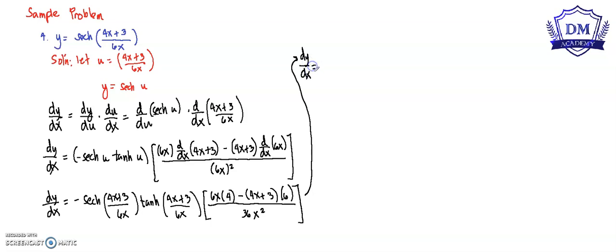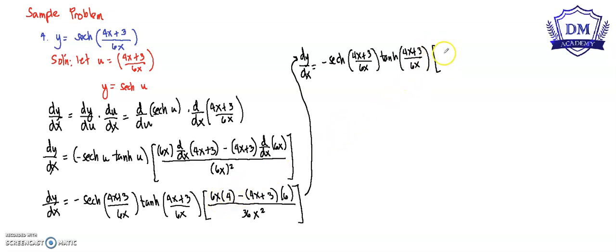So dy/dx is equal to the negative of hyperbolic secant of (4x + 3)/6x times the hyperbolic tangent of (4x + 3)/6x, multiplied by: 6x times 4 equals 24x, then 4x times 6 equals positive 24x, multiplied by negative 1 gives minus 24x. Then 3 times 6 equals 18, multiplied by negative 1 gives negative 18. All over 36x squared. As you notice, we can cancel out 24x minus 24x because that is 0.